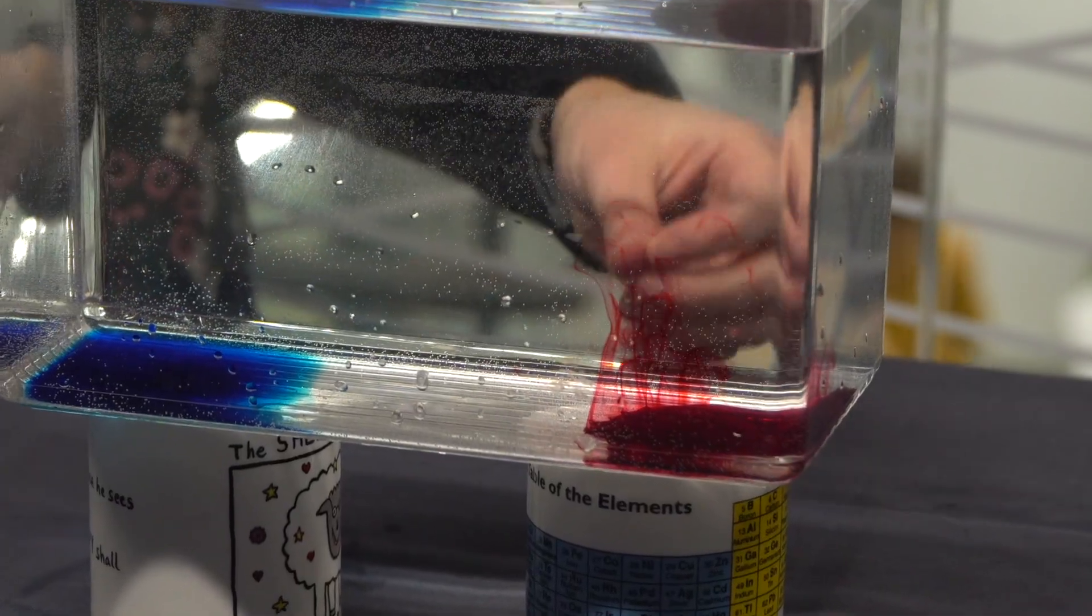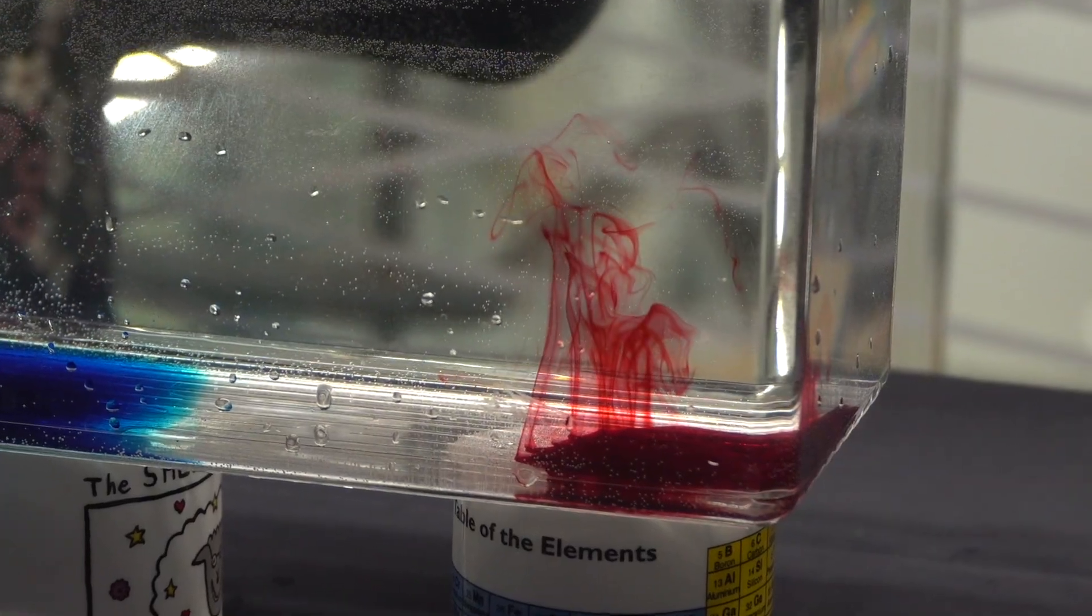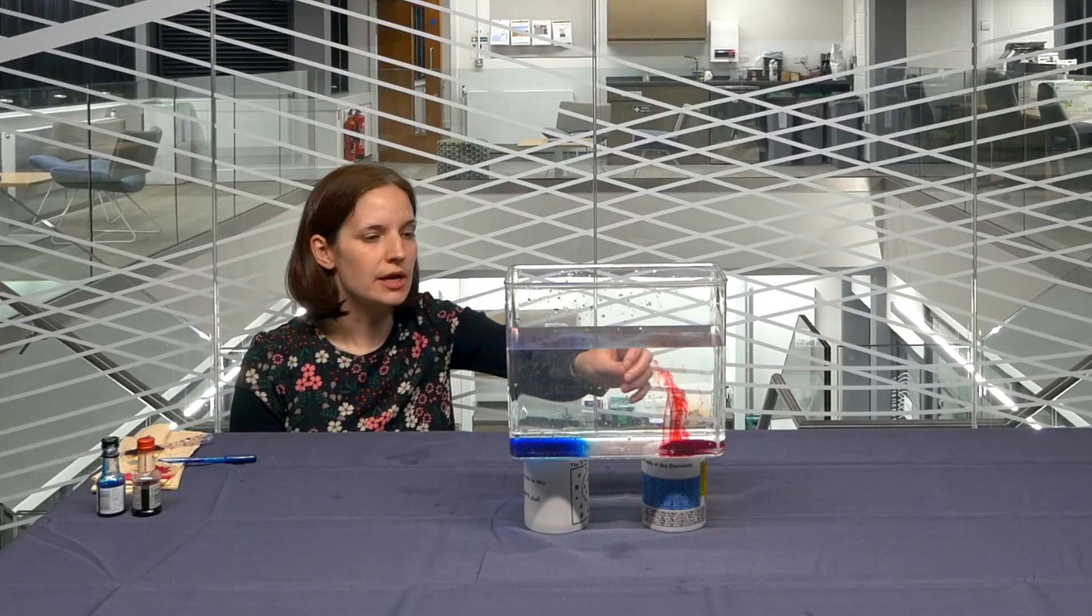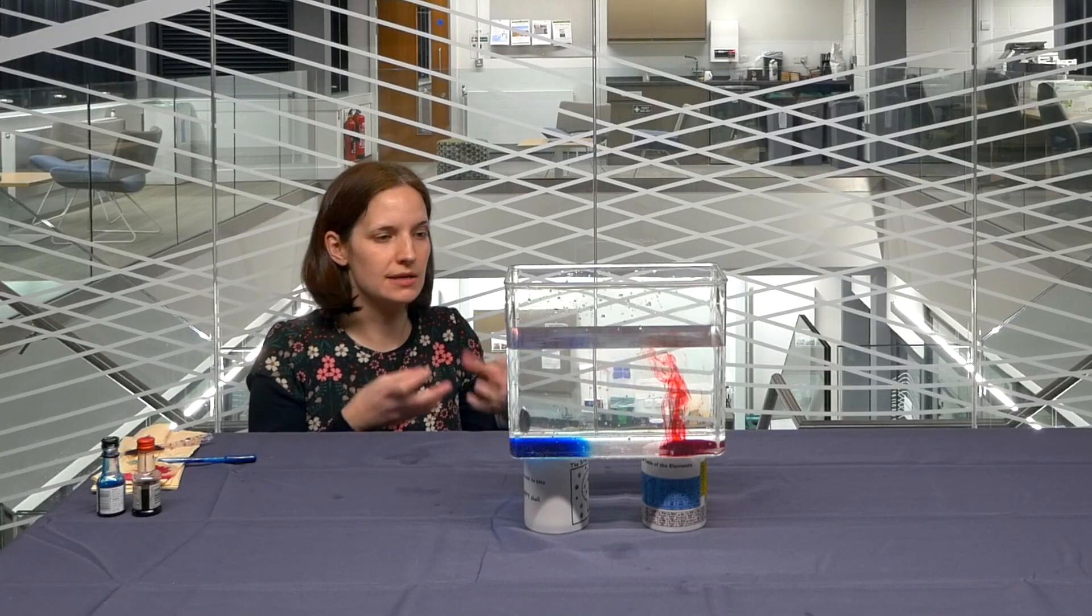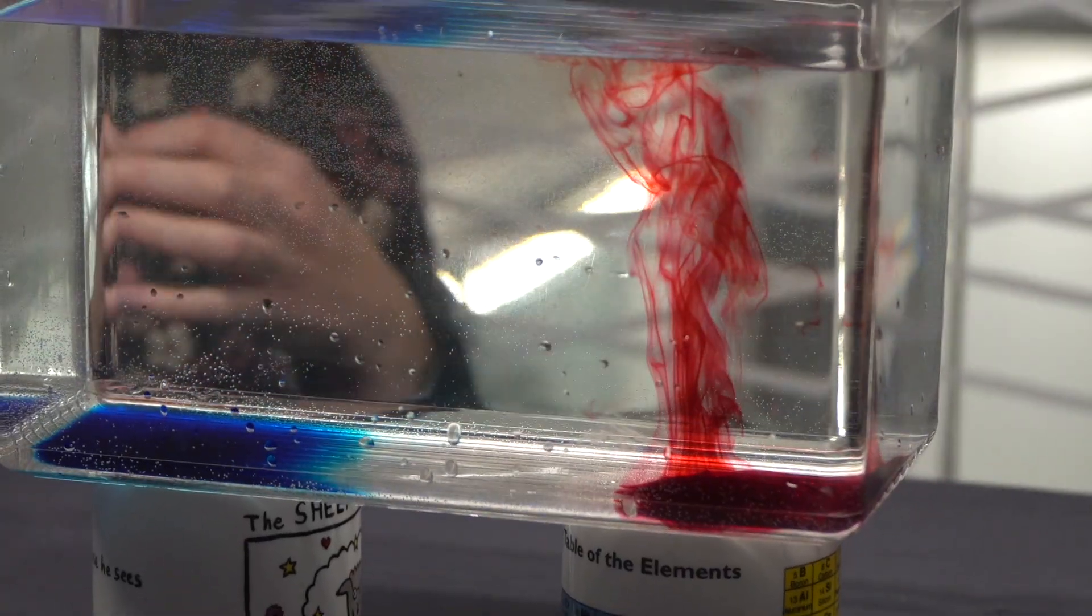We can start to see these filaments of red dye moving upwards. This is because we've got warm water moving upwards. As the water in the bottom of the tank warms, the water molecules start to move around more because they're getting heated and agitated. As they do that, they spread out, so they become less dense.